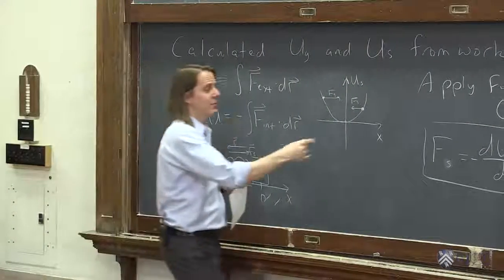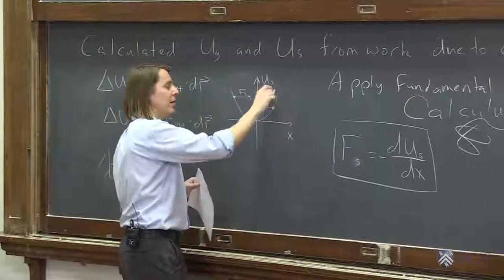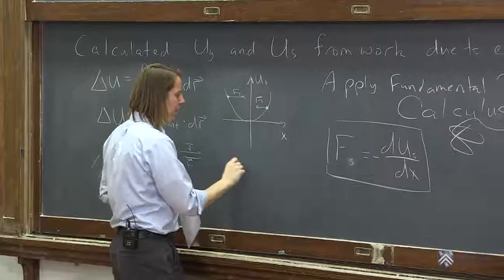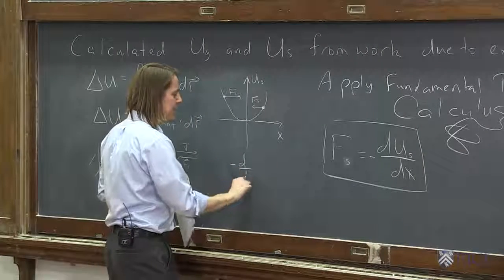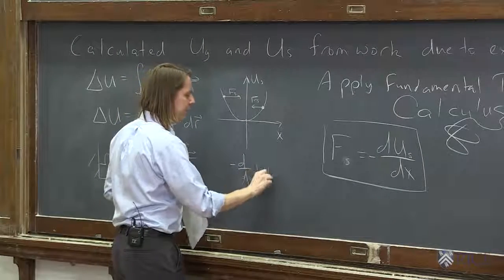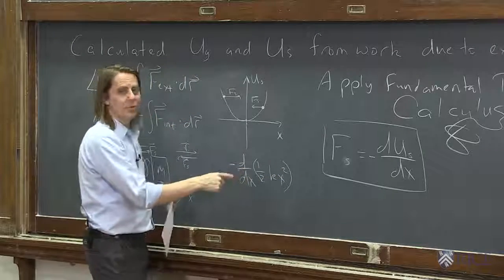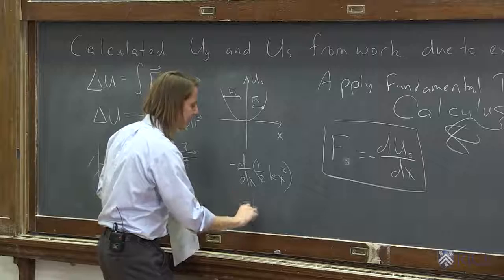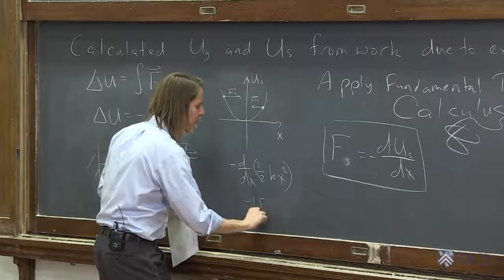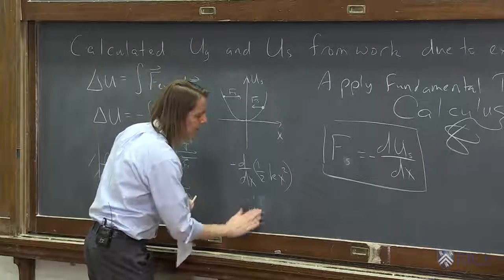And it's not just the direction, you actually get the right magnitude. If you were to actually work it out, one-half kx squared minus d/dx of one-half kx squared, that's Us. What do you get? Two times a half is one, kx, you get minus kx. And sure enough, that is the Hooke's Law force.